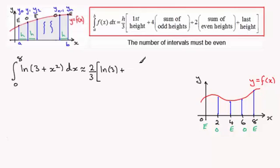Then we've got to do plus 4 times the sum of the odd heights. So that's going to be the one when x is 2 and the one when x is 6. So we're going to do 4 times, I'll just put a bracket there. Now when x is 2 you're going to have 2 squared which is 4 and the 3 is 7, so that's going to be the natural log of 7. And then to this we put when x is 6, so you've got 6 squared which is 36 plus 3 which is 39. So you've got plus the natural log of 39.